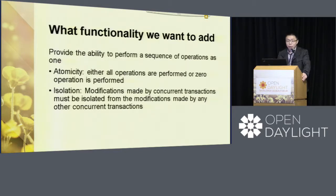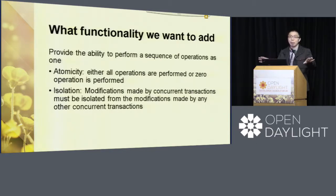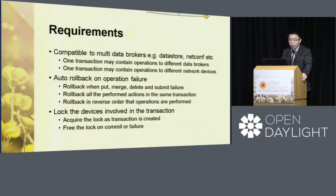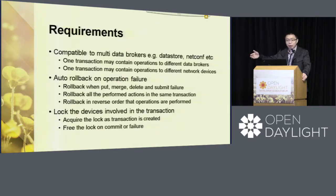The main thing is very simple: the two functionalities we want to achieve from a network perspective are atomicity and isolation. Basically, I want to treat the network as one entity or one device when programming it, instead of handling ten devices separately. From the requirements point of view: first, we need compatibility — looking at the current ODL framework, you have the netconf data broker, the normal data broker, and other data brokers. We allow different data brokers to be involved in one transaction.